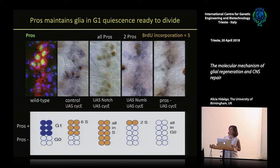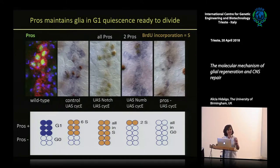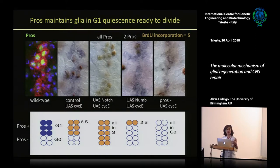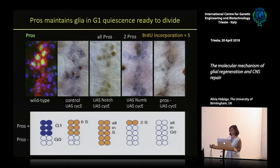The Prospero-positive cells are in G1, not in G0. The Prospero-negative cells are in G0. What this means is that in the cell cycle, if a cell is in G1, as soon as it has a rise in Cyclin E levels it will enter S phase and start the cell cycle and go into cell division. Whereas a cell that has fully exited the cell cycle cannot be provoked to divide quickly just with Cyclin E - it might never divide or it might take a lot longer.